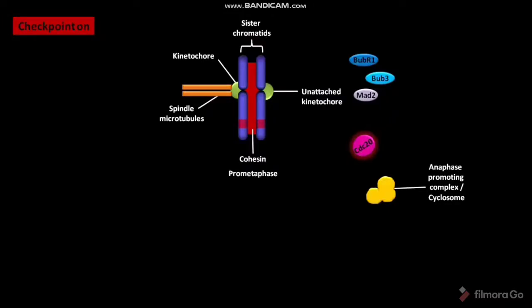When the spindle assembly checkpoint is turned on, the unattached kinetochore binds to proteins like BUB-R1, BUB-3, MAD-2, etc. These proteins form a complex.